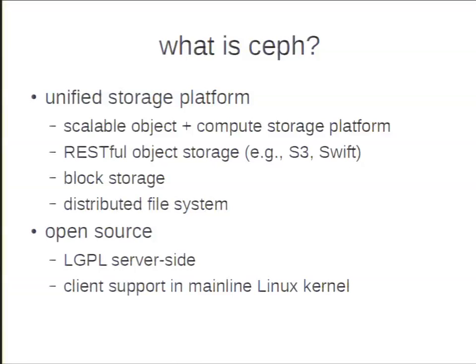What Ceph provides is a unified storage platform. At the lowest layers, it provides an object and compute storage platform based on distributed, replicated, highly available object-based storage. On top of that underlying infrastructure, we provide a number of different services. One of them is a RESTful object storage service based on the Amazon S3 and Swift APIs.